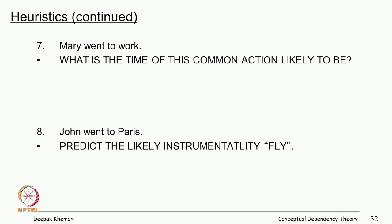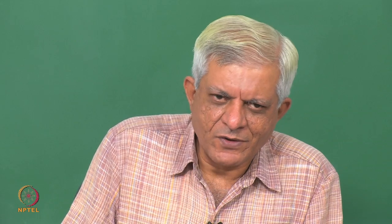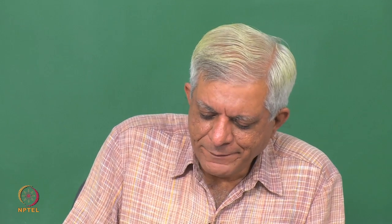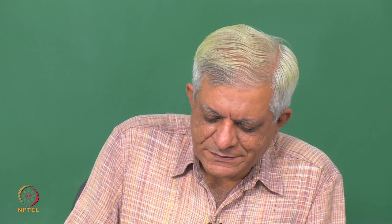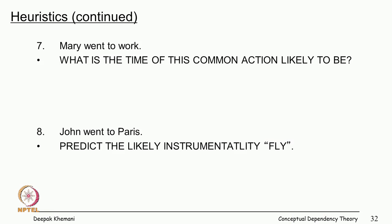There are also heuristic inferences: 'Mary went to work' — what time is this action likely to occur? Most likely people go to work in the morning, so it must be morning — unless she works in a call center in India servicing someone in the US. 'John went to Paris' — predict the likely instrument: fly.